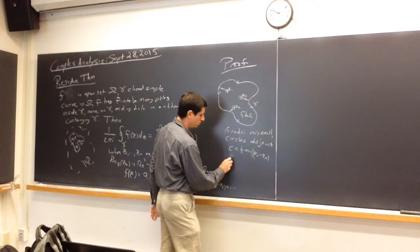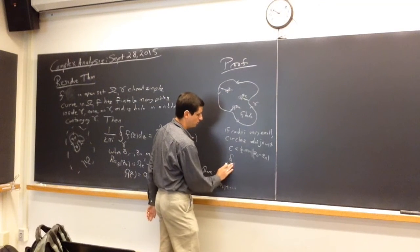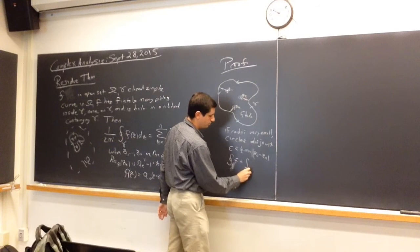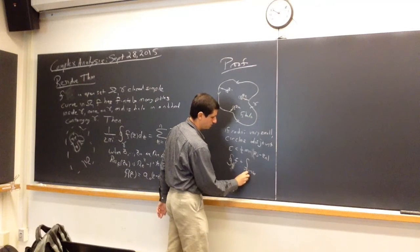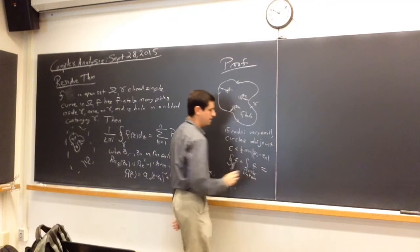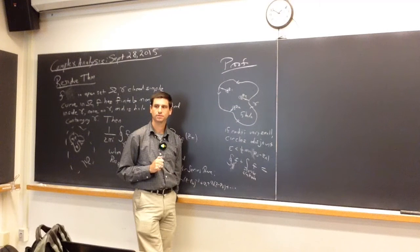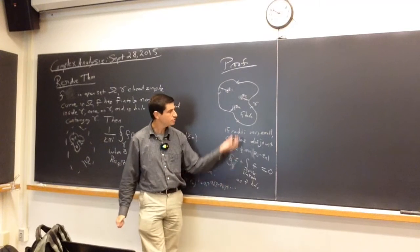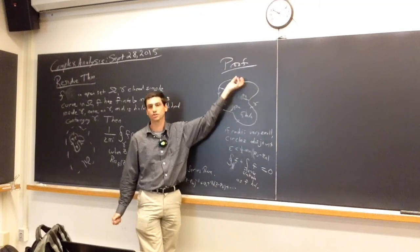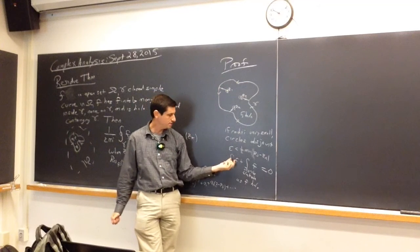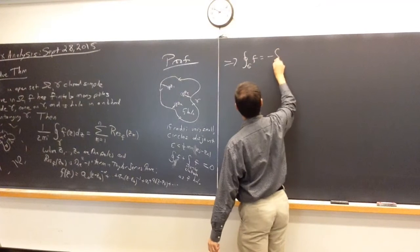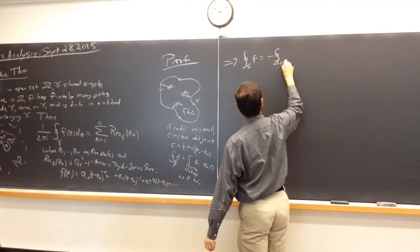So we get the integral over gamma of f plus the integral over all the circles clockwise equals zero, because f is holomorphic. We use the fact that f is holomorphic to say the integral over this nice region is zero. That means the integral of f over gamma equals the negative of the integral over all circles clockwise.